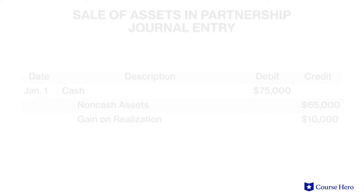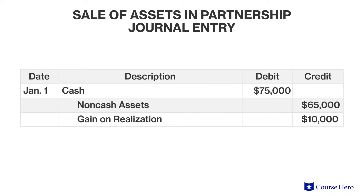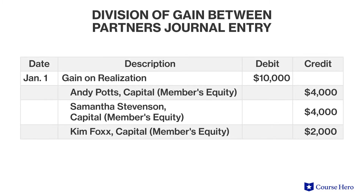The first journal entry in the partnership liquidation process involves the receipt of seventy-five thousand dollars of cash in exchange for assets with a book value of sixty-five thousand dollars, which triggers ten thousand dollars of gains.